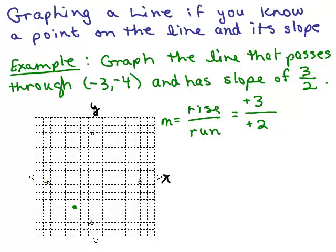Starting from our point negative 3, negative 4, we go a run of positive 2 — that's 2 to the right — and then a rise of positive 3, which is up 3. There's another point on the line. We can do this again from the new point: run of positive 2 and up 3, and we have another point on the line.